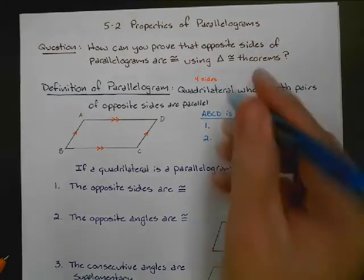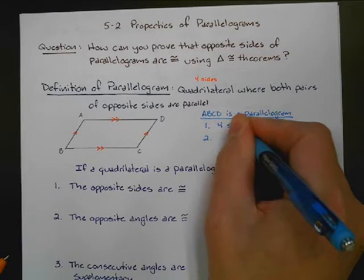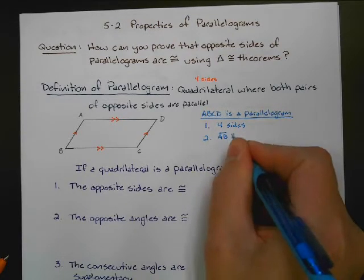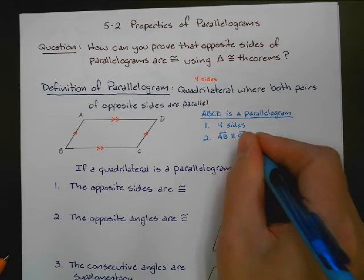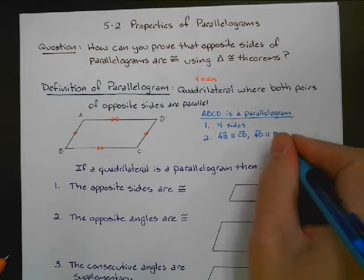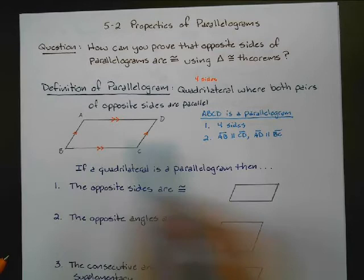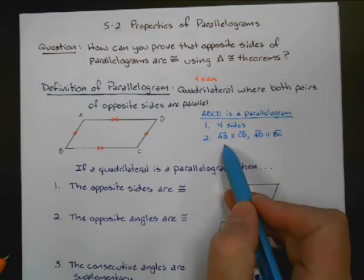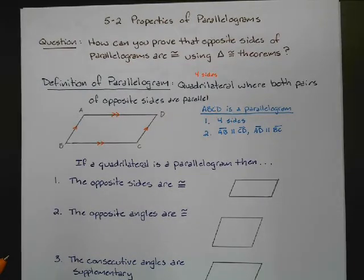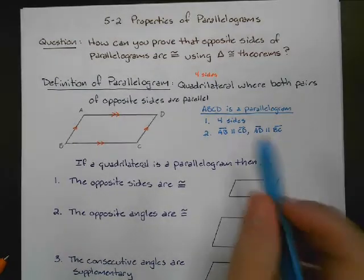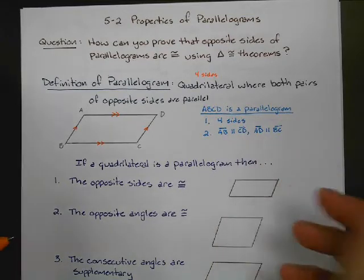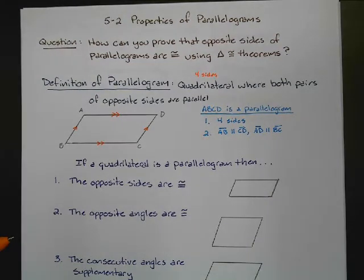There are two things in that definition. Number one, we know it has four sides. Number two, side AB is parallel to side CD, and side AD is parallel to side BC. Just by stating this is a parallelogram, we know those two things. Now, because the opposite sides are parallel, four other things become true. Using triangle congruence theorems, we can prove four more things are always true about parallelograms.